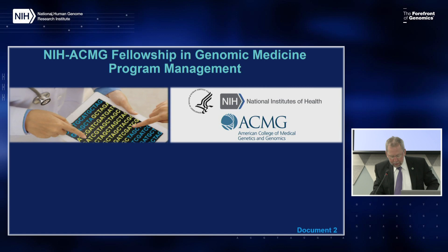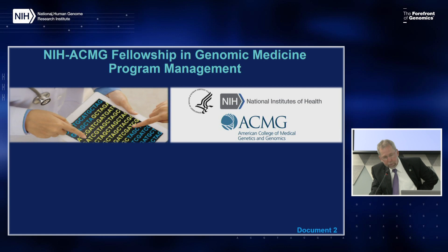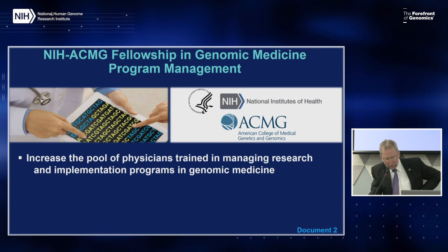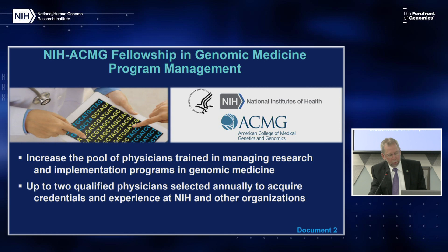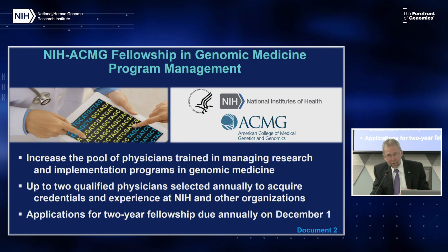Another fellowship program is sponsored by NIH and the American College of Medical Genetics and Genomics (ACMG) — a fellowship in genomic medicine program management. This fellowship involves collaboration among five NIH entities: NHGRI, the National Heart, Lung, and Blood Institute, the National Institute of Mental Health, the National Institute of Minority Health and Health Disparities, and the All of Us Research Program. The goal is to increase the pool of physicians trained in managing genomic medicine programs. Up to two qualified physicians can be selected annually for a 24-month training opportunity, with applications due December 1st.